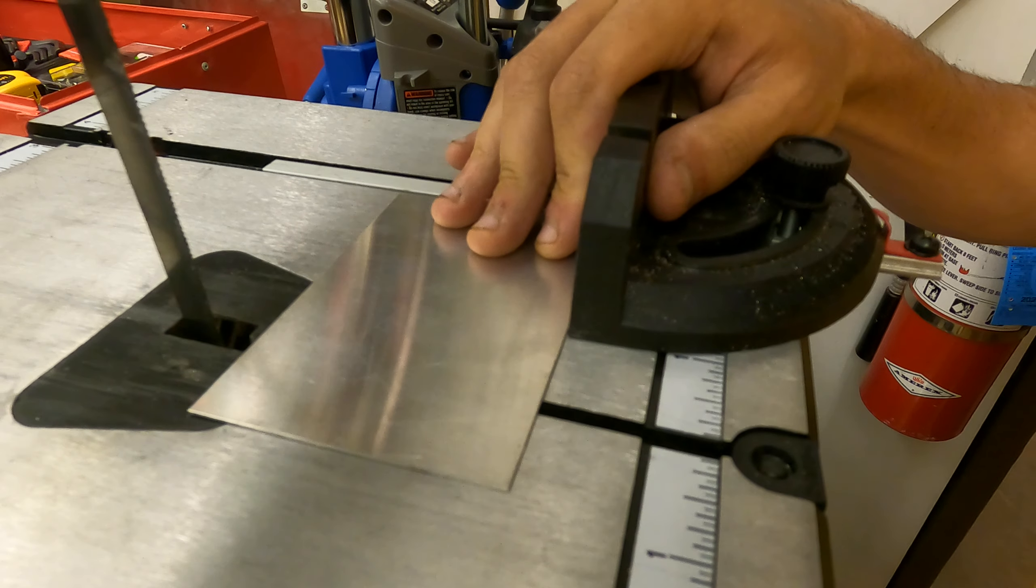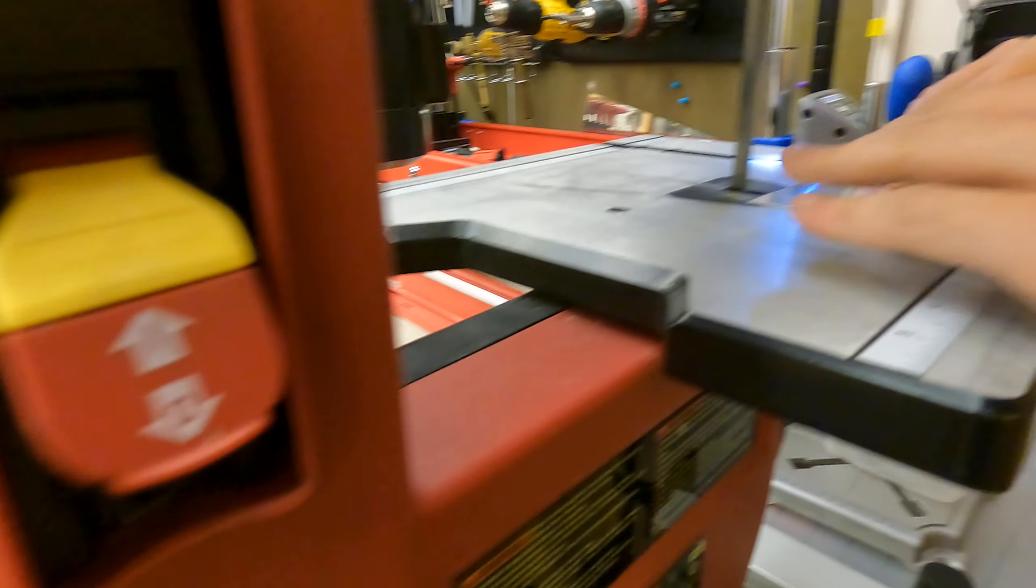For more precise cuts you may want to consider making some sort of work holding or jig setup to get precise cuts. But if you just want to cut a strip of aluminum, turn it on.